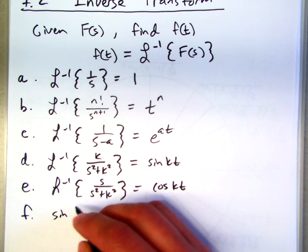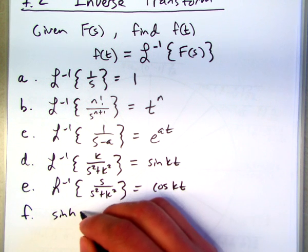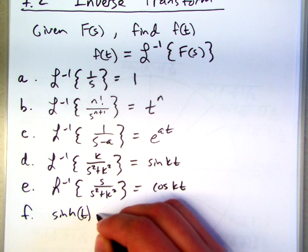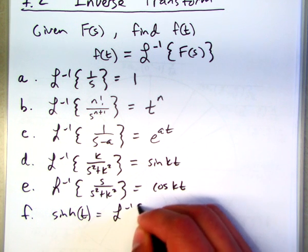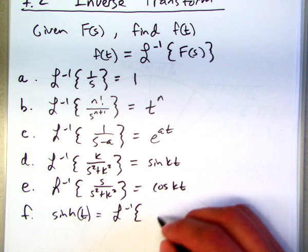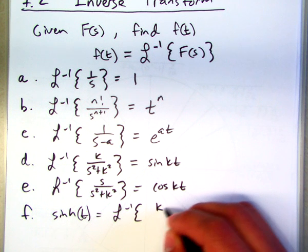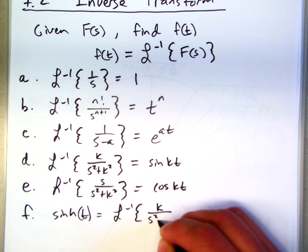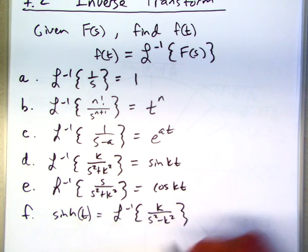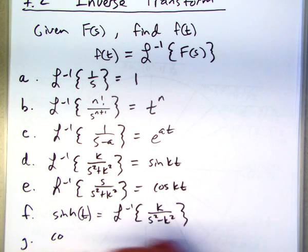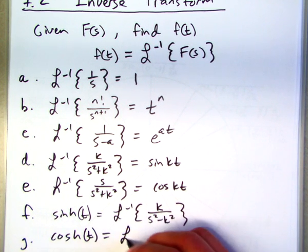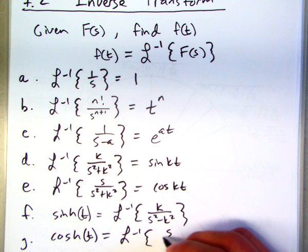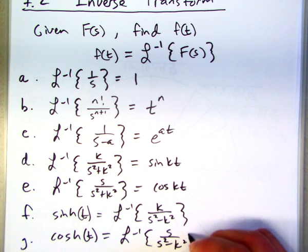The inverse of s over s squared plus k squared is cosine kt. And hyperbolic sine and cosine come from the inverse transform of k over s squared minus k squared. I don't know why I wrote the order backwards, but we'll go with it.